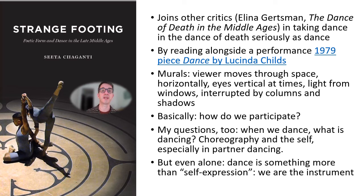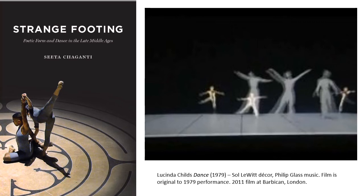I'm going to leave you with this excerpt from Lucinda Childs' Dance, a 1979 piece — this is from a 2011 performance at the Barbican in London. The artist Sol LeWitt did the decor, the music is by Philip Glass, and the film with the giant dancers is original to the 1979 performance. This piece is very important to Sita Giganti — it is one of the ways that she conceptualizes how the Dance of Death is working in the Middle Ages. So I'd like you to watch this if possible and we can talk about it more in class.